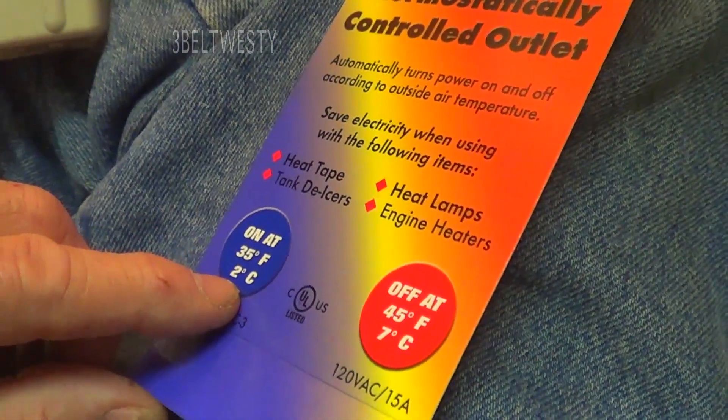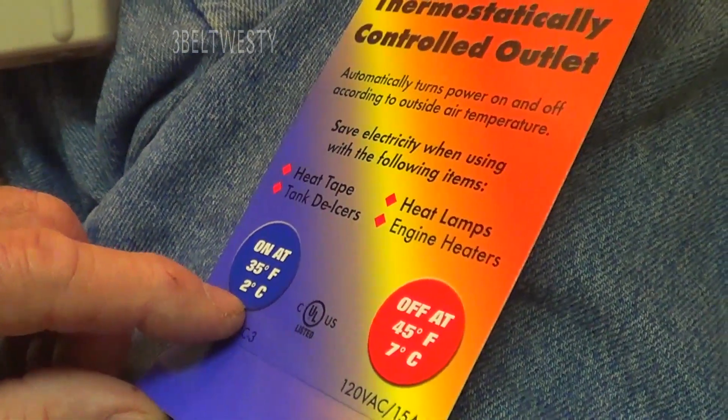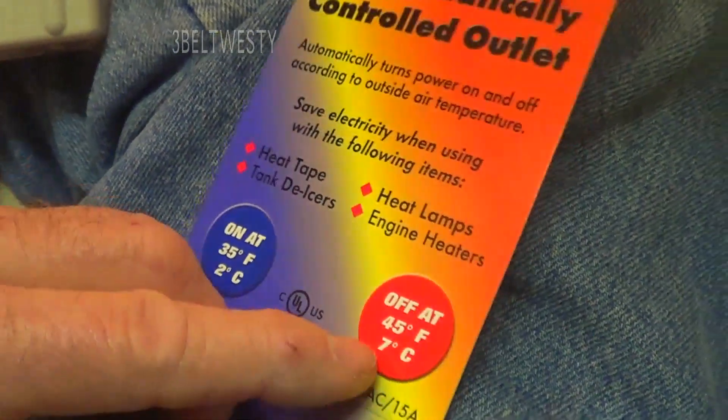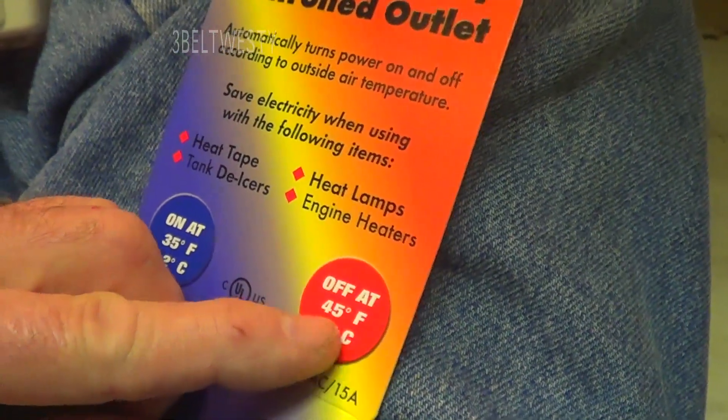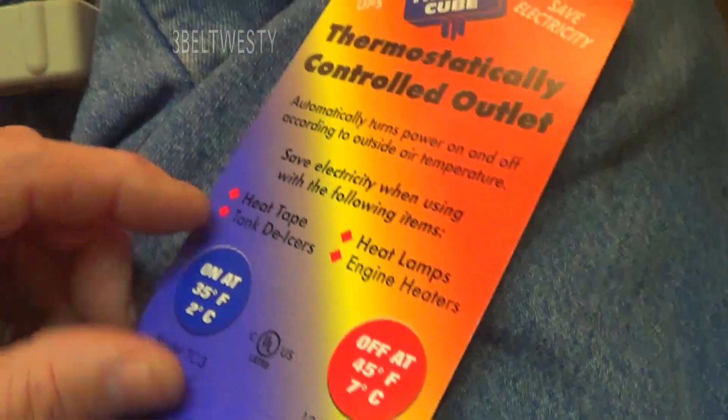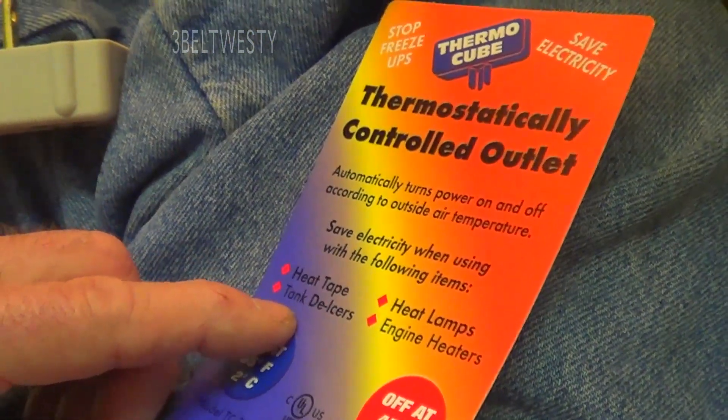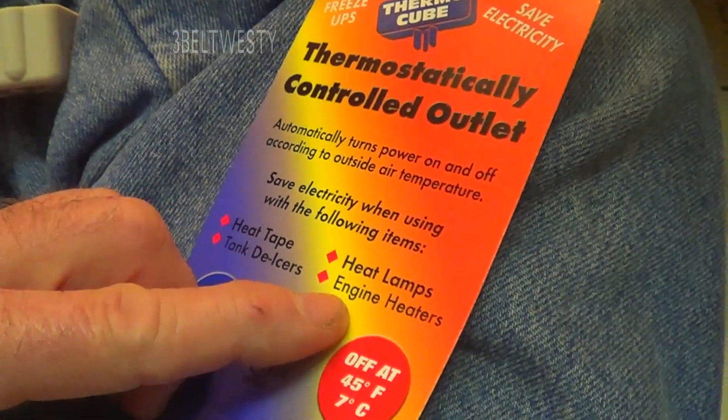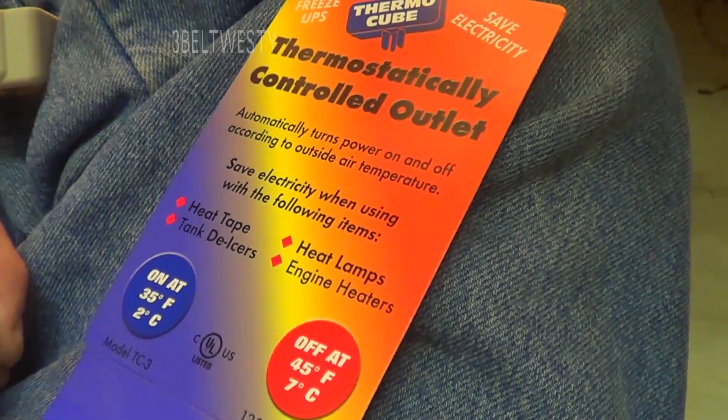It turns on at 2 degrees C below freezing, at 0 C, that's 35 F. It turns off at 7 C, that's 45 F. So it says it's for heat tape, tank de-icers, heat lamps, engine heaters. I'm in the deep south here, so I'm not really using an engine heater.